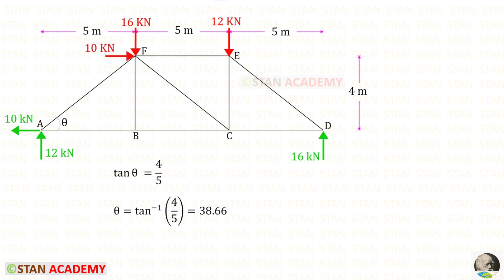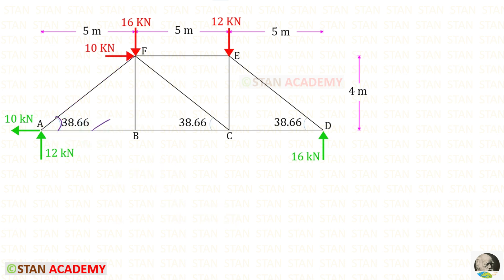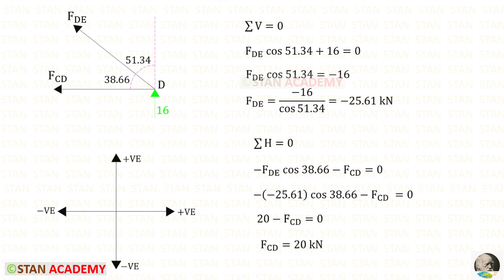Now we need to find the member forces. Before that, we need to find the angles. Let us take this triangle and find the angle theta. Tan theta is opposite side by adjacent side. The opposite side is 4 meters and the adjacent side is 5 meters, so it will be 4 upon 5. So theta will be 38.66 degrees. If this angle is 38.66, this angle and this angle also should be 38.66. First, I am going to take joint D and find the member forces using the method of joints. I am going to use only cos theta. 90 minus 38.66 gives this angle 51.34 degrees.